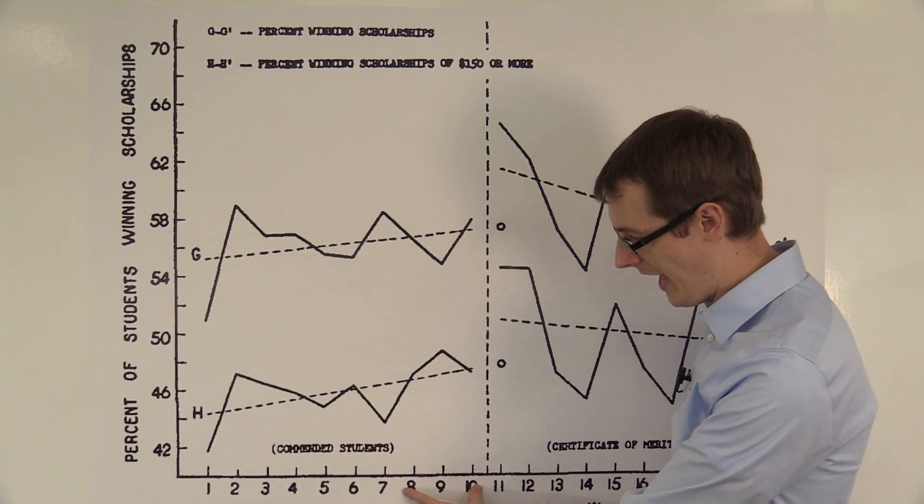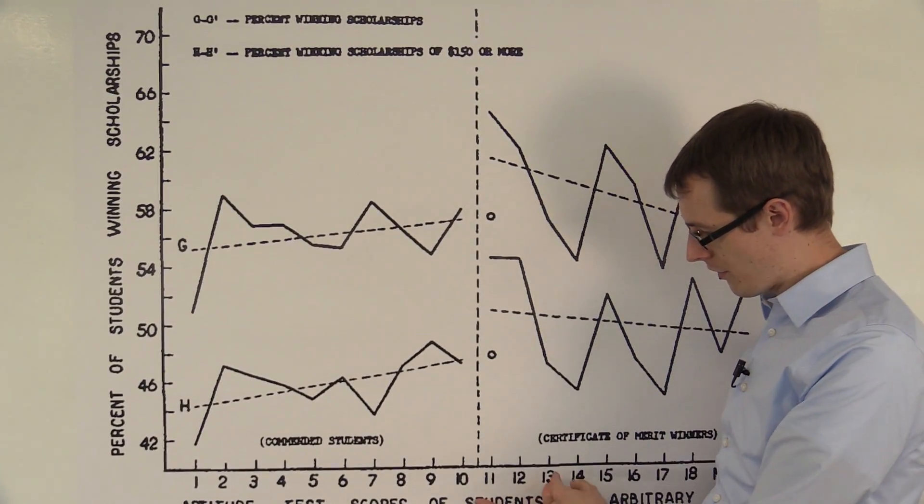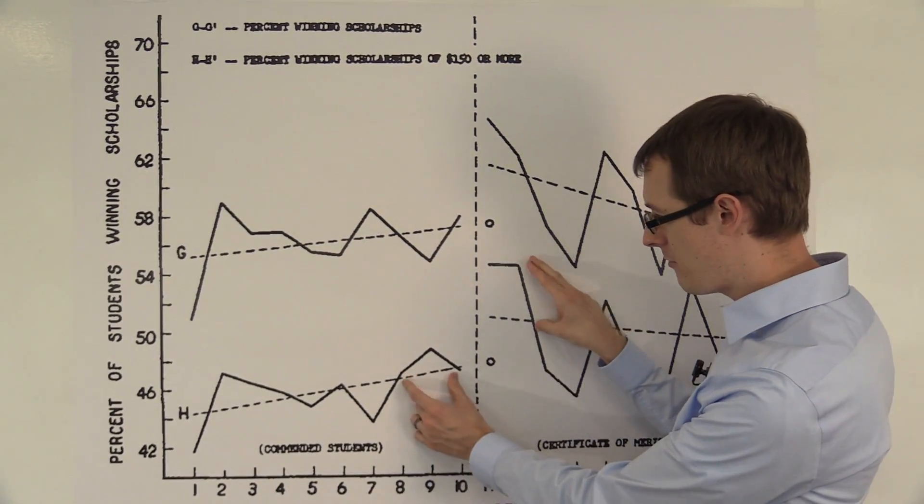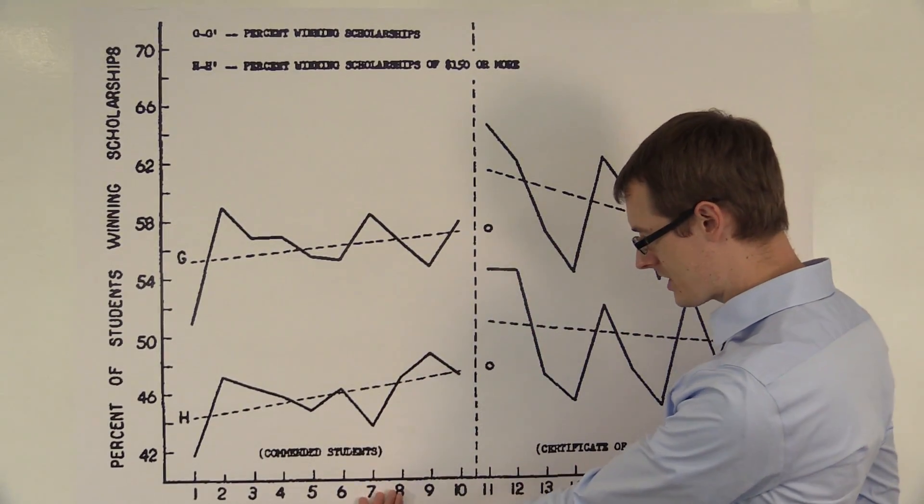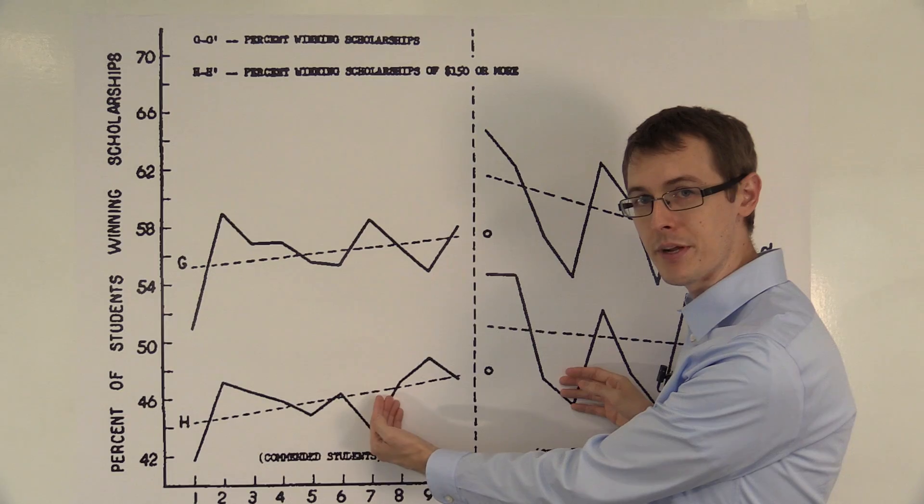We could keep going. I could include the 8s over here and the 13s here, and that would give me another difference. I could include the 7s and then the 14s. That would give me another difference.